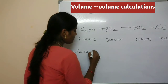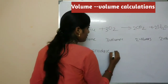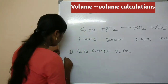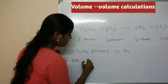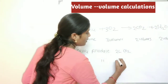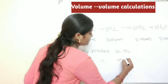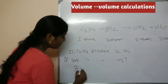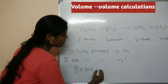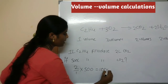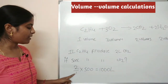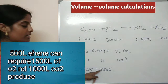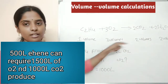Next, 1 liter of ethyne produces 2 liters of carbon dioxide. If 500 liters of ethyne produces how much CO₂? Calculating: 2 divided by 1 × 500 = 1000 liters of carbon dioxide is produced.